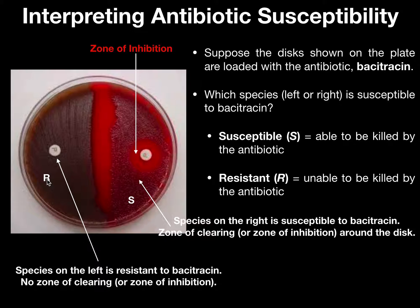I'm not going to do a separate slide on Optochin because it's going to be exactly the same. You'll have a disc plated in bacteria, and when you pull it out of the incubator, you look for a zone of inhibition. If there is one, it's susceptible; if there's no zone of inhibition, it's resistant. The way you interpret bacitracin versus Optochin is identical. If there's a zone of inhibition, it's susceptible. If there's no zone of inhibition, it's resistant. That's as simple as it gets.